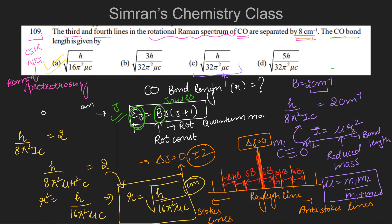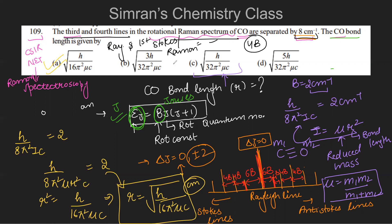To summarize this question: the key points were knowing that the separation between the third and fourth lines in the rotational Raman spectrum is 4B, using B in cm⁻¹ with the formula h/(8π²Ic), and knowing that the moment of inertia is I = μr². Using all these, we can derive the bond length r. That's it — thank you!